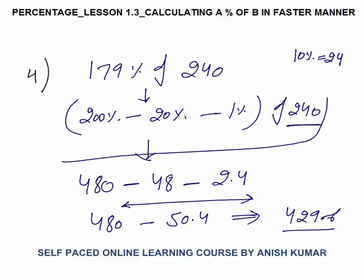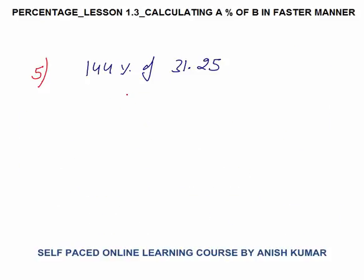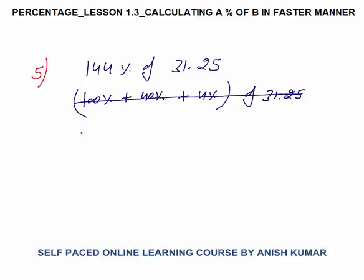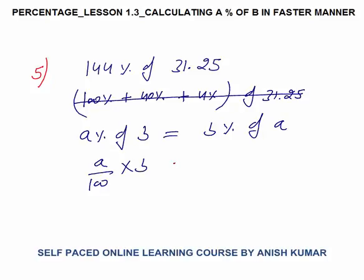Again no need to write this working part in the exam — I am just writing in order to explain you. In the exam, straight away you must go from question to answer. Question 5 is 144 percent of 31.25. We won't solve it as 100 percent plus 40 percent plus 4 percent of 31.25, because 40 percent of 31.25 would be very complicated. Here a new concept is introduced: A percent of B is always equal to B percent of A. This is because A by 100 into B equals B by 100 into A — both are equal. So very importantly, A percent of B is always equal to B percent of A.